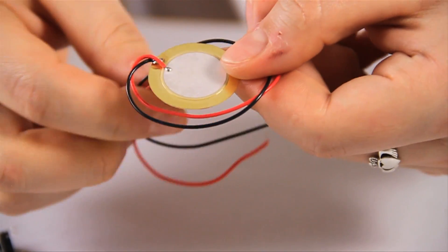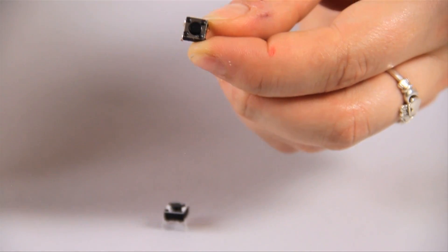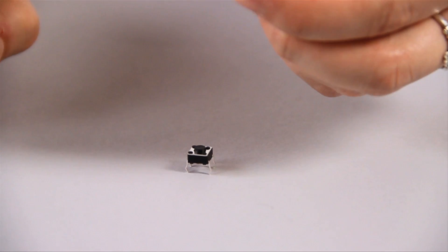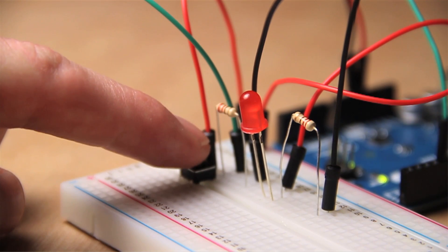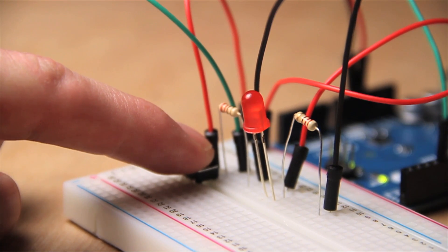There's also five push buttons. These are simple switch mechanisms. Electricity flows through the circuit when the button is pressed down, like that. And when the button is not pressed, it breaks the circuit, stopping the flow of electricity.